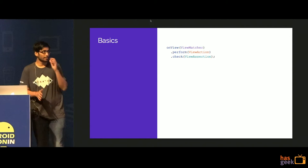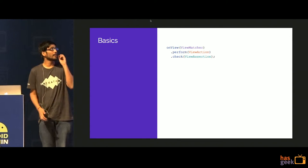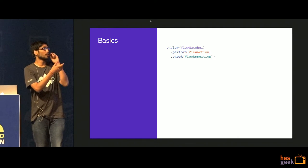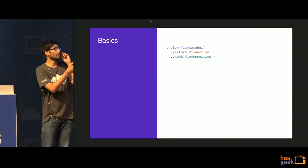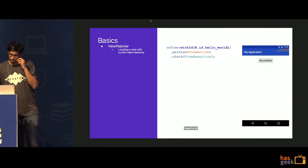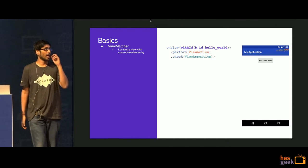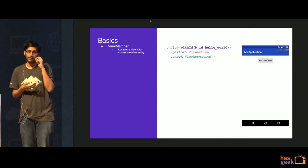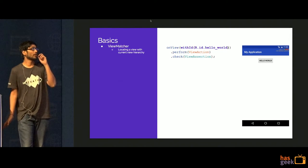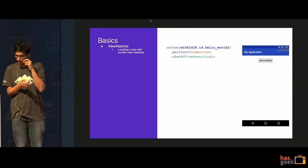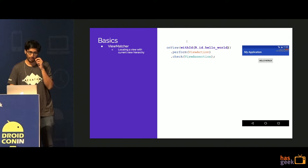Espresso has a very simple fluent API. You provide the view matcher, then you perform some view action, and then you check the view assertion. Here's a life-changing app — when you click the hello world button, the button gets disabled. First you find the hello world button using withId, which is the view matcher that locates the view within the view hierarchy.